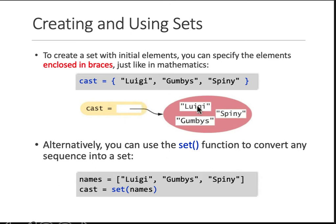And in which order they are stored, we don't know and we don't care. It's all up to the compiler. Compiler may store Luigi first, then Spiny and then Gumbys, okay? Because ordering in sets does not matter.